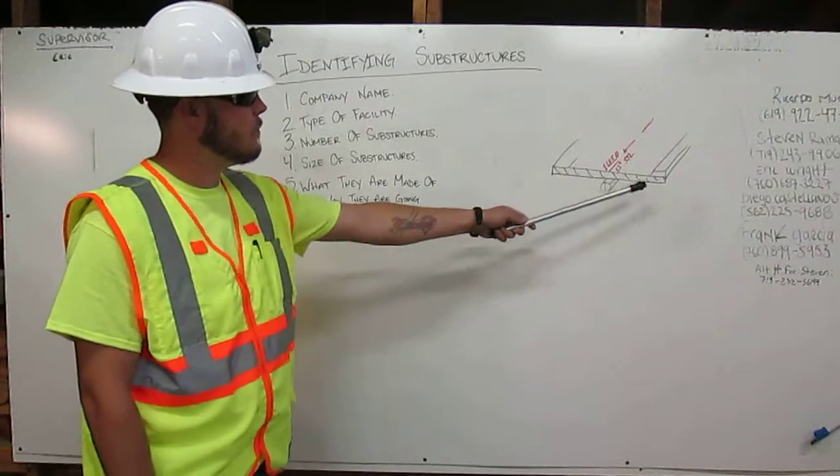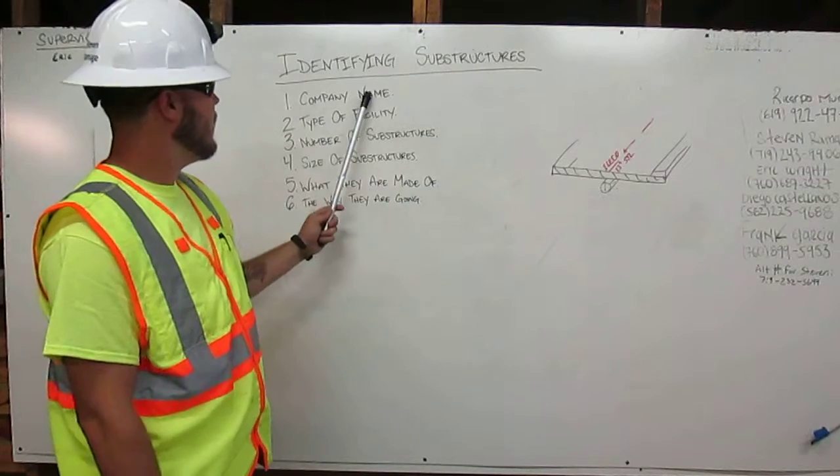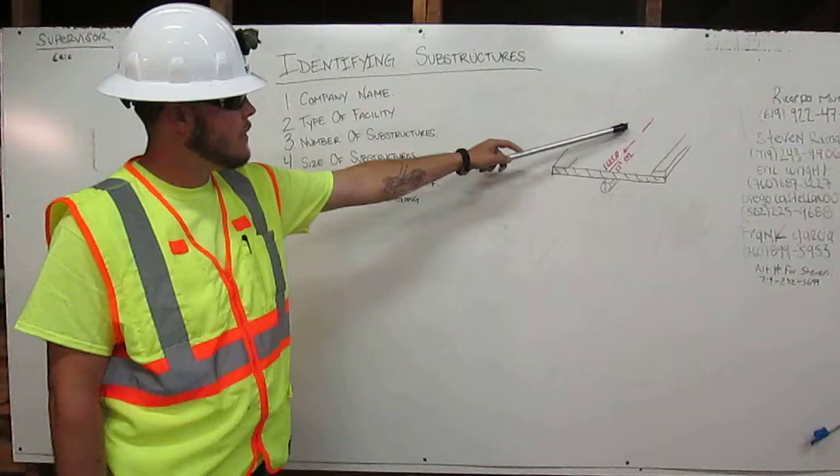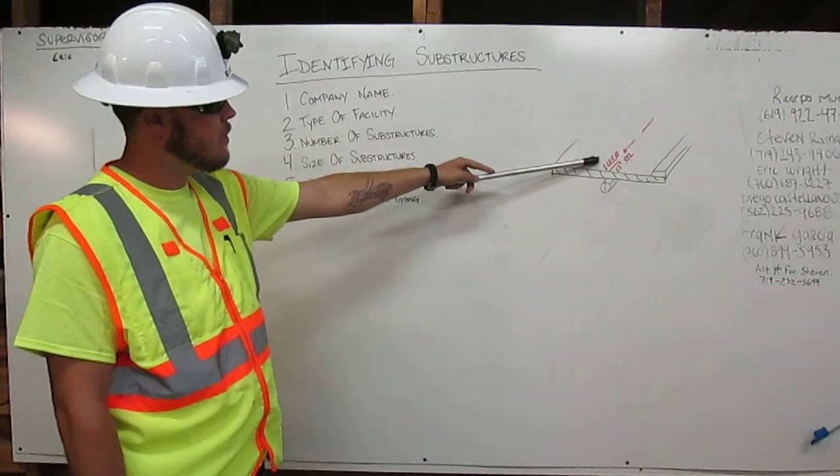Here we have a road with a substructure underneath it. Company name is Elko. The type of facility is an electrical facility because it's marked in red.